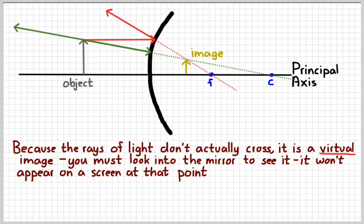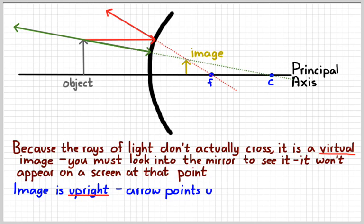You can only see yourself in the mirror when you look at it from the front. Also, because the arrow is pointing up, this image is upright — that's the fancy way to say right side up.